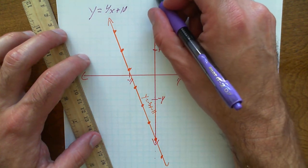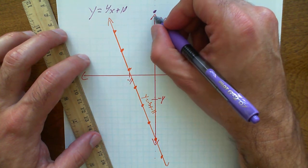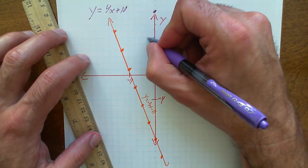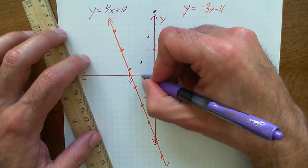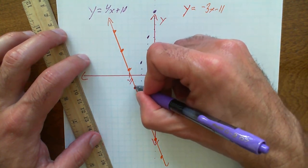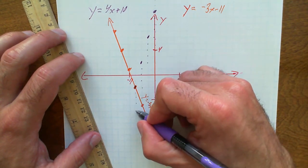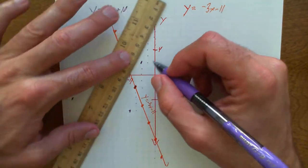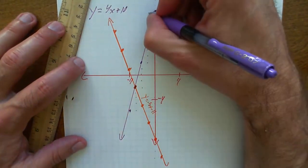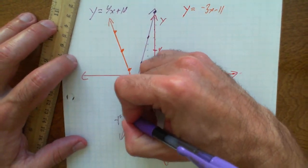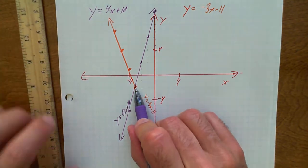A slope of 4x means I go up 1, 2, 3, 4 over 1. But I don't have room for that, so let's go this direction — down 1, 2, 3, 4 over 1, and continue plotting points. Boom — there's our intersection right there! We have the point of intersection. This is y equals 4x plus 10, and here's my solution right there — that's where they intersect.